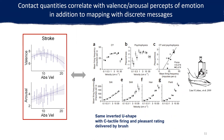An inverted U-shape curve was fitted between the valence rating and the velocity. This correlation is well aligned with the trend widely reported for the pleasant rating and CT-fiber firing activity induced by controlled brush stimuli. Furthermore, arousal rating exhibits a similar positive correlation with stroking velocity as other subtypes of peripheral afferents such as SA1 and SA2, which might explain their role in signaling arousal percepts.